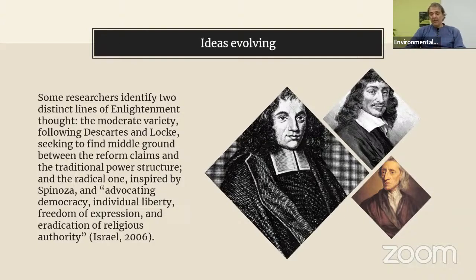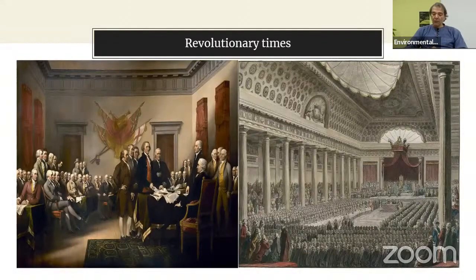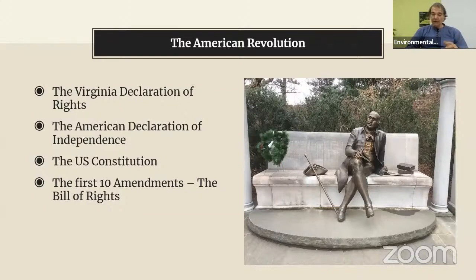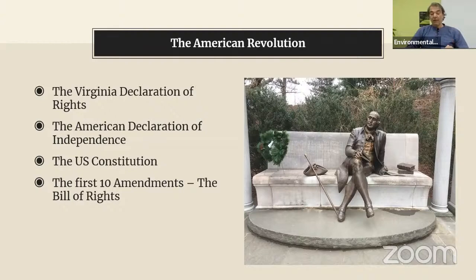Towards the end of the 18th century, a wave of revolution swept the old order. Both the American Revolution and the French Revolution are hugely important for our story of human rights development. Regarding the American Revolution, the report focuses on the Virginia Declaration of Rights, the first Declaration of Rights, less than a month prior to the American Declaration of Independence. The Declaration of Independence itself, with its famous preambular part — 'we hold these truths to be self-evident that all men are created equal' — and then the U.S. Constitution, which did not include rights, and the first ten amendments — the Bill of Rights — adopted a few years later.